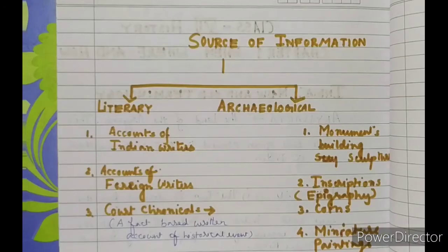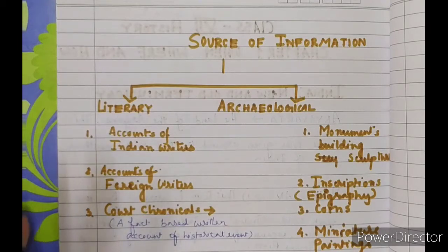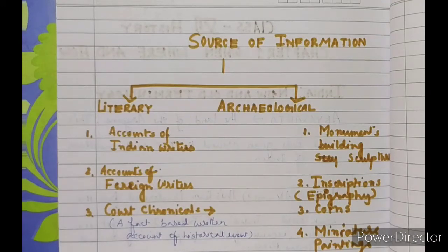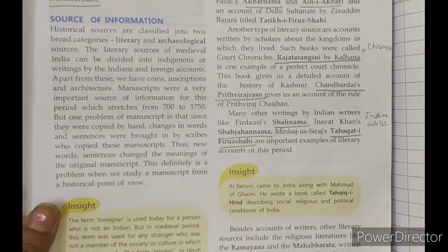Now we are going to talk about the sources of information about the medieval period. We divide sources of information into two groups: literary sources and archaeological sources. Under literary sources, we further divide them into accounts of Indian writers, accounts of foreign writers, chronicles, and biographies and autobiographies.